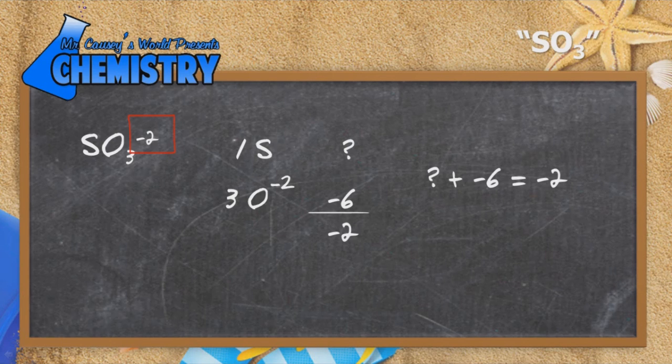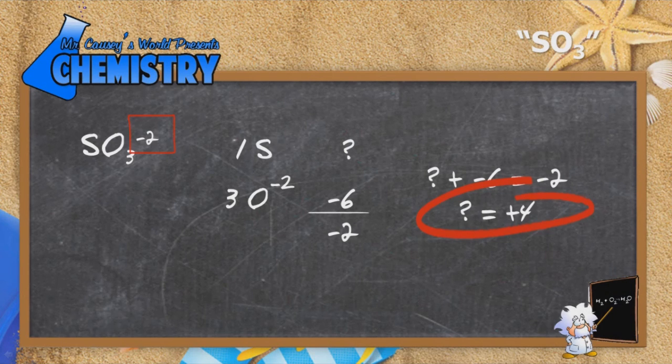Add positive six to both sides and we get plus four. That's the charge of sulfur in this ion.